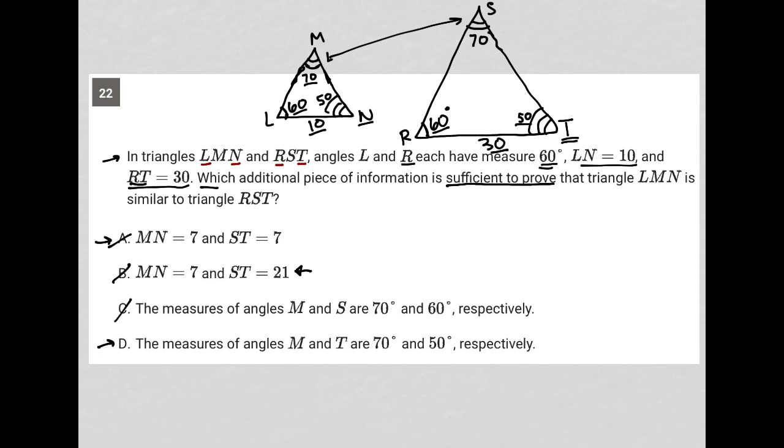Okay, so choice D is the only answer choice that would confirm that all three corresponding angles are congruent. And because we already have proportional sides here between LN and RT, I don't have to show proof of that elsewhere. So choice D is the best answer to this question.